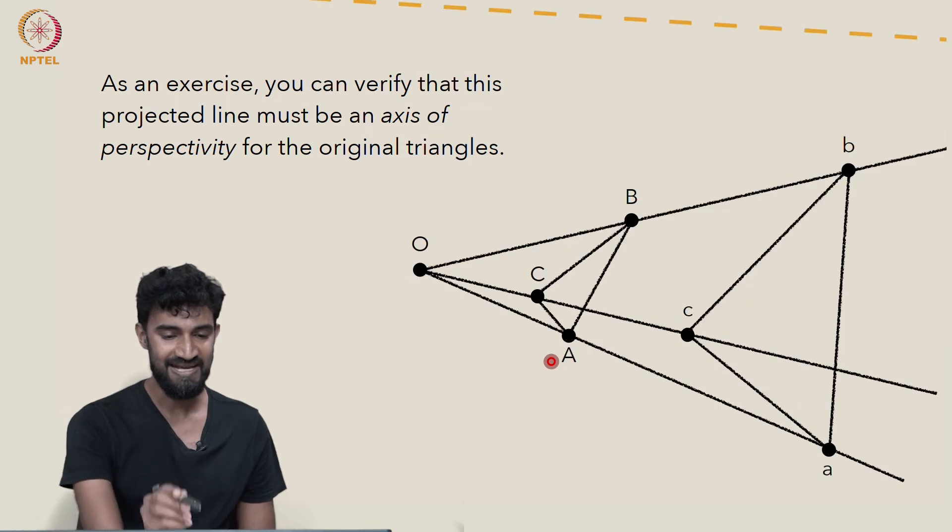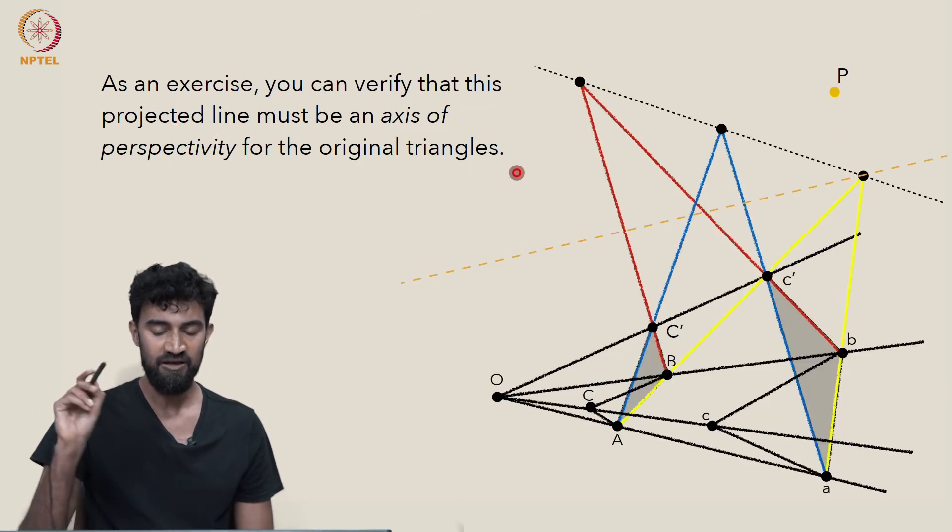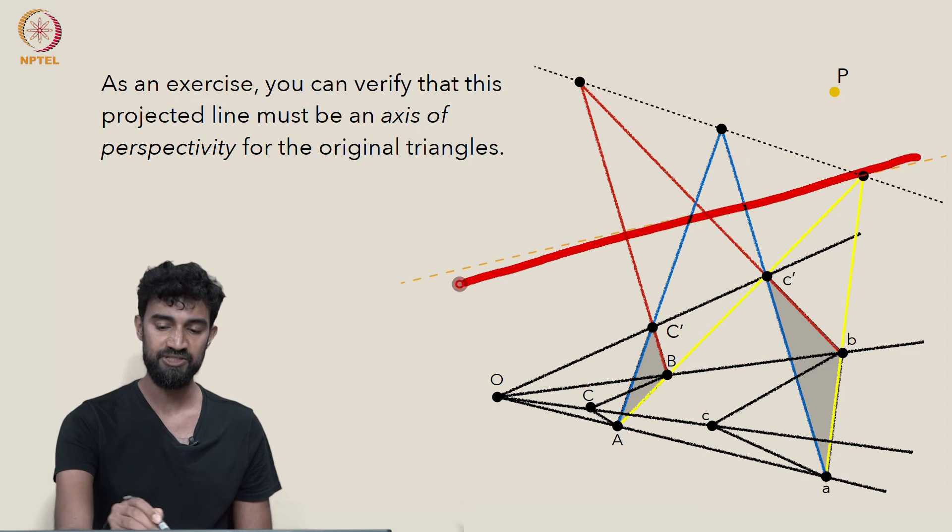So as an exercise, can you verify that this projected line must be the axis of perspectivity for the original two triangles? When we project our new axis back down to the ground plane,